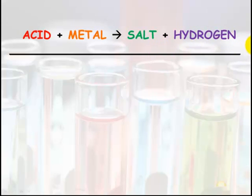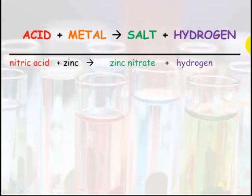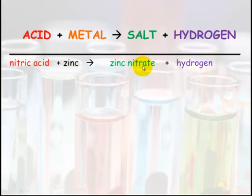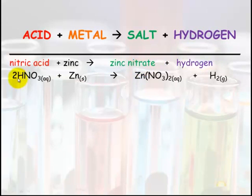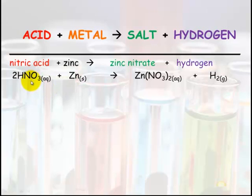An example of that: nitric acid plus zinc will make hydrogen gas and what's left? Zinc nitrate. We'll look at the formula here. HNO₃ plus Zn — the Zn hooks up with the NO₃ to make zinc nitrate, and the two hydrogens get left to make hydrogen gas.